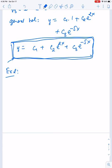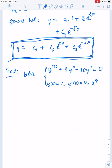Let's discuss another example related to the previous one. We want to solve the initial value problem: y''' + 3y'' - 10y' = 0, with initial conditions y(0) = 7, y'(0) = 0, and y''(0) = 7. To solve this equation, we first work with the equation itself and then apply the initial conditions later.